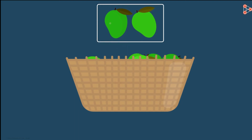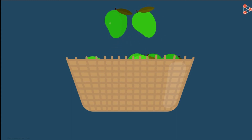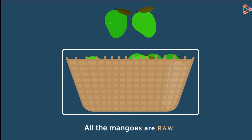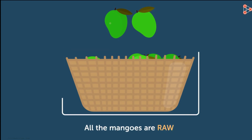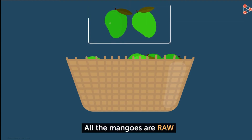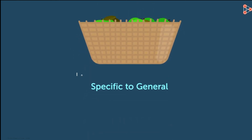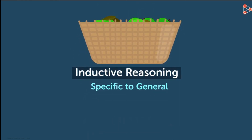We observed two mangoes in this basket and made a generalized conclusion. The conclusion: we generalized that all the mangoes are raw. So by observing a specific outcome of the experiment, we concluded the observation in a generalized form.